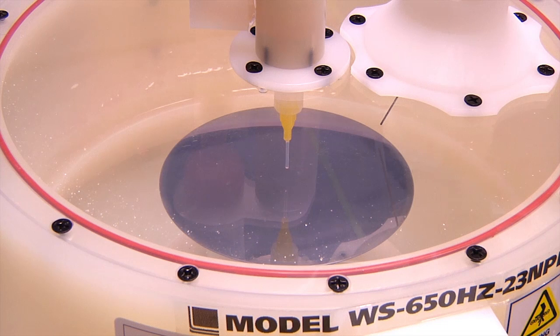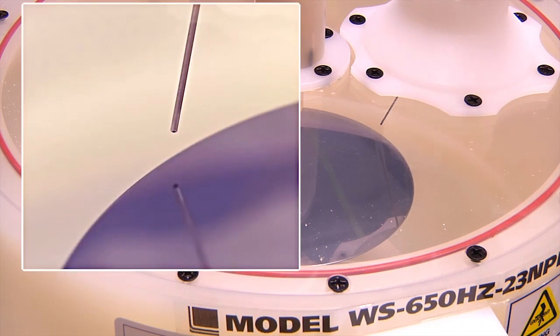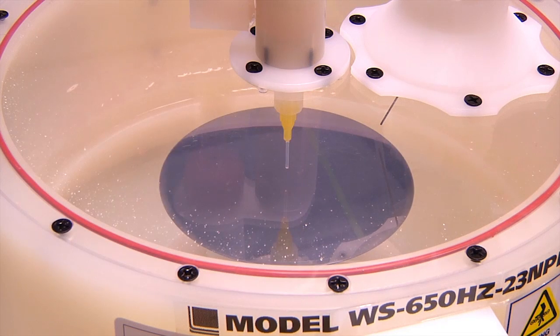The substrate is slowed to around 1000 RPM and the solvent is dispensed for 3 seconds, removing the edge bead. The substrate is then accelerated to 3000 RPM to dry the edge.